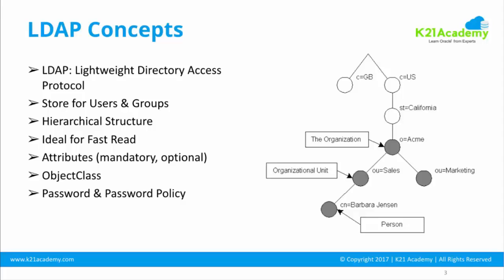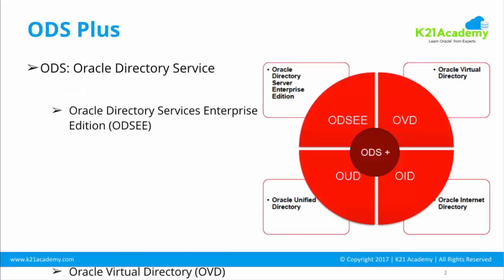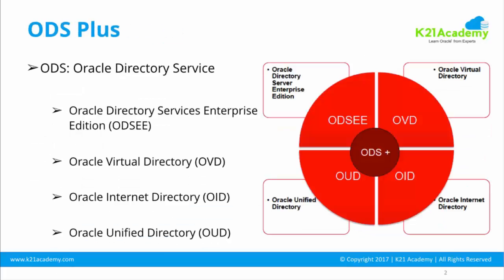Since around 2003-2004, Oracle acquired many Identity and Access Management products. One of those acquisitions was Sun Microsystems, known for Solaris and Java. Sun had a product called Sun LDAP Server or Sun Directory Server, which was later rebranded as Oracle Directory Service Enterprise Edition. So ODSE is essentially a rebranding of the Sun LDAP Server.